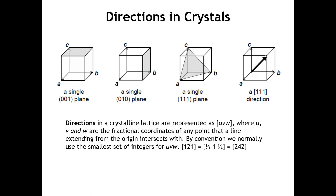If you think about that line, you would realize that it also goes through one-half, one-half, one-half, as well as 2-2-2, and 3-3-3. Any of those all refer to the same direction. By convention, we're going to use integers for u, v, and w, and those integers are going to be the smallest set we can. So instead of calling it the 2-2-2 direction, we call it the 1-1-1 direction.